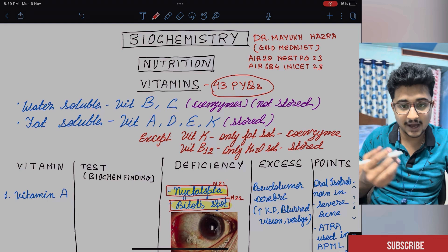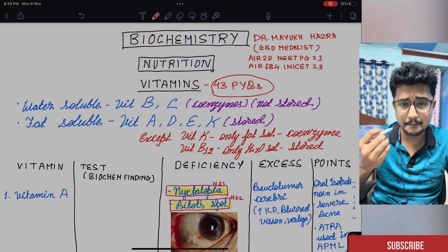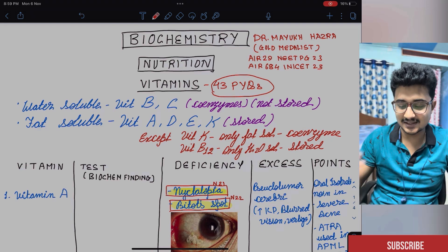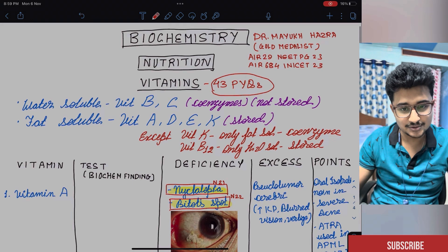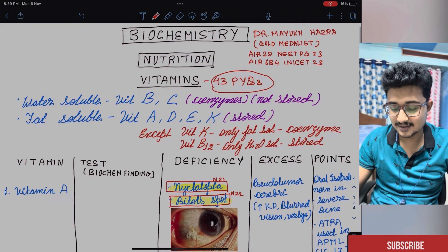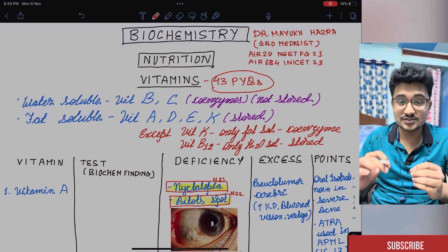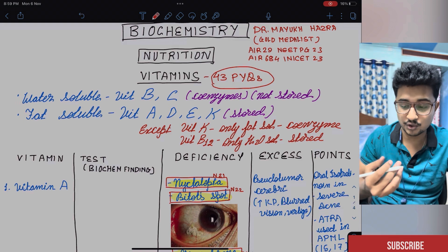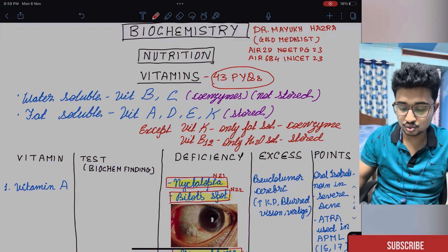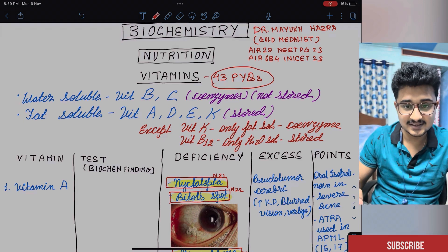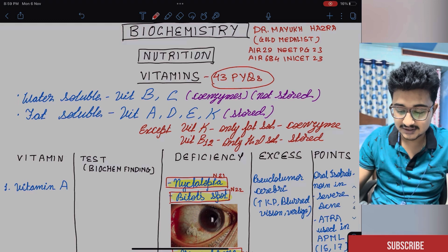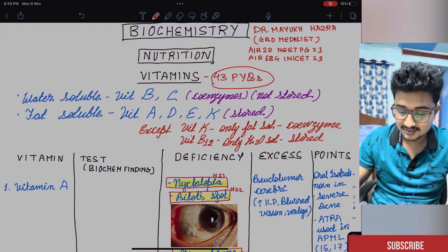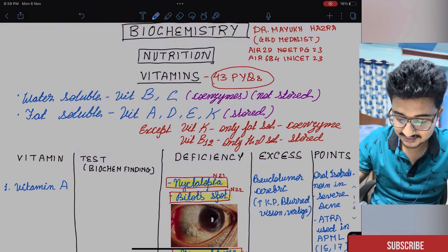I am starting with biochemistry today and the most important that comes is the nutrition and in the nutrition most important is the vitamins and in vitamins only I had covered 43 PYQs. I have made the notes in such a way. Maybe in 2 to 3 pages of this tab only the 43 PYQs are covered. Let's start without any delay.